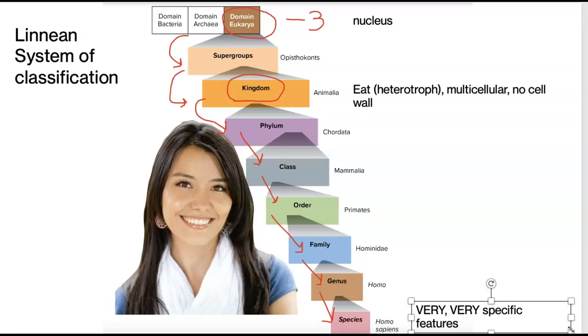Remember the organizational pattern. Domain, supergroup, kingdom, phylum, class, order, family, genus, species. That is what I want you to remember and that it becomes more specific as we march our way down this list. Starting at domain, very broad, all the way down to species. Very, very specific features to call you a specific species.